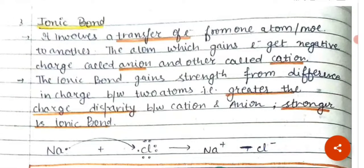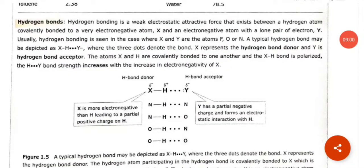For example, with sodium and chlorine — a metal and a non-metal — electron transfer occurs. The electron transfers from sodium to chlorine, so chlorine gains a negative charge because it gains the electron, and sodium acquires a positive charge because it loses the electron.